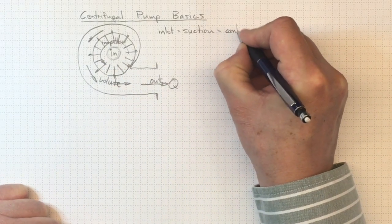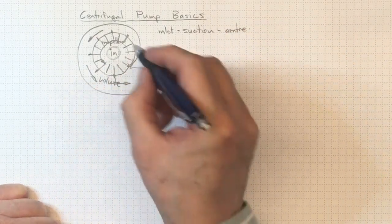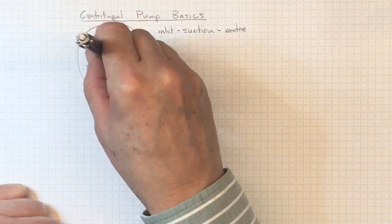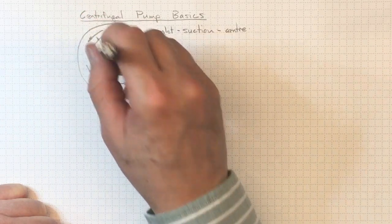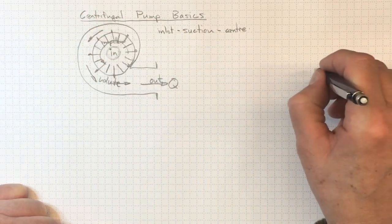That inlet is in the center, however, sometimes we'll have a pipe flowing in this way, so-called end suction pumps, so the flow comes in this way, and then it comes out going this way.